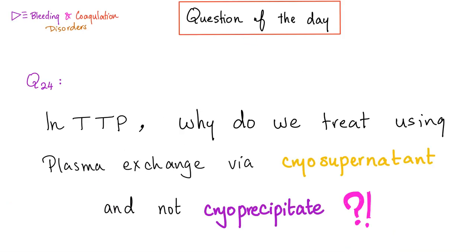Here is a very difficult question: in cases of TTP, why did we use cryosupernatant to treat TTP and not cryoprecipitate? Please let me know the answer in the comment section — you'll find the answer in the next video.